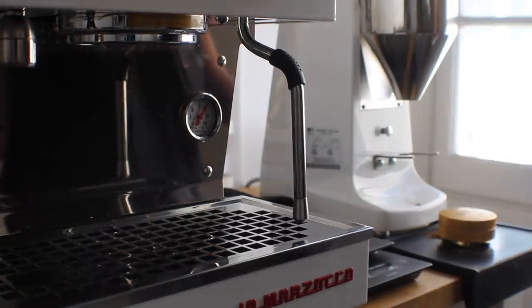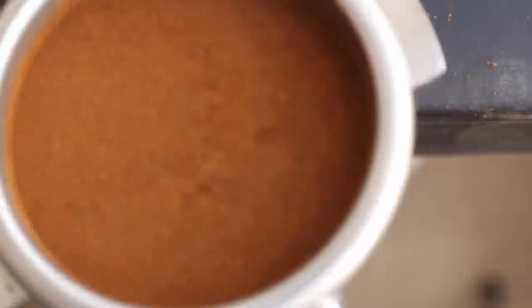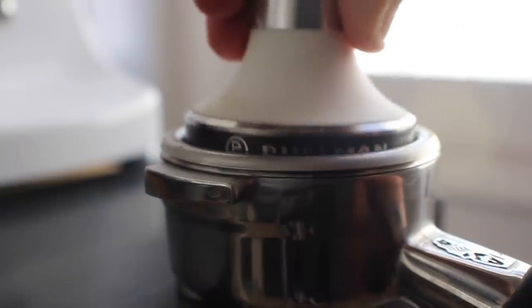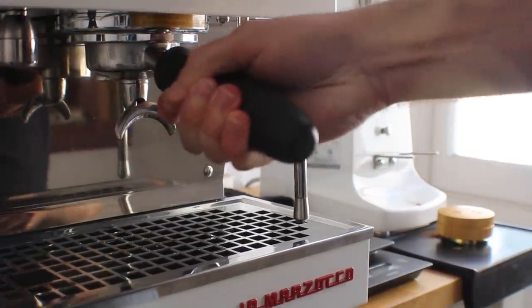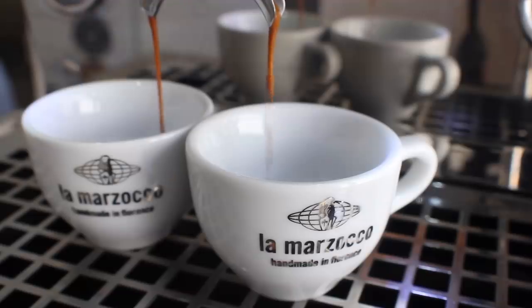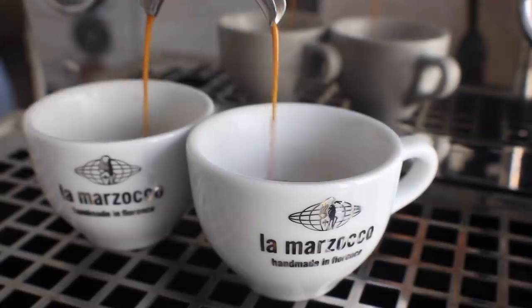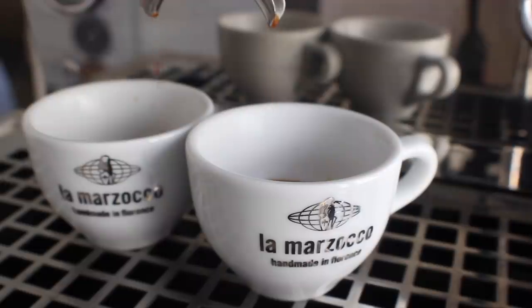You don't want to suction your puck out of the portafilter itself, but it just works so well every time. It creates a nice flat tamp. As long as you're paying attention to it, it's pretty much impossible to pull it out crooked because it'll just get jammed in there, and it comes out with nice consistent shots every time.